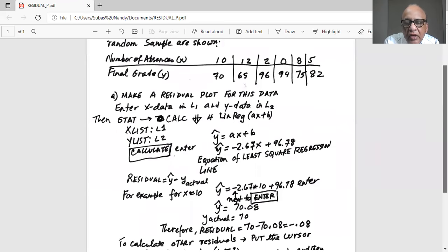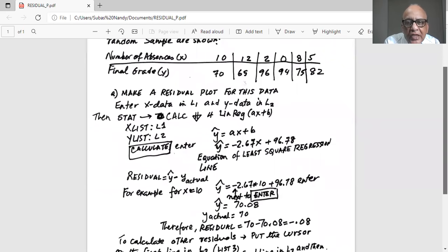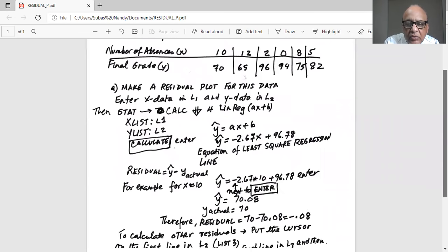Now residual is defined as Y hat minus the Y actual. By Y actual, I mean the actual values of Y as shown in the table in the top of the page. So for each value of X, we can calculate a Y hat. And then we take the difference between Y hat, which is the predicted value of Y from the least square regression line equation minus Y actual gives me the residual.